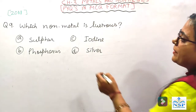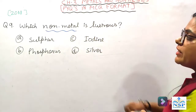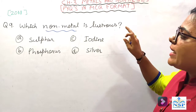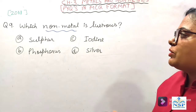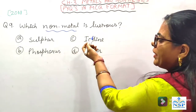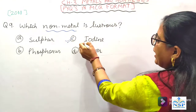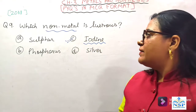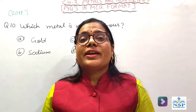Next question: which non-metal is lustrous? Generally non-metals में lustrous property नहीं होती — lustrous जो होता है वो metals में होता है। तो ये exception है। Options: Sulfur, Phosphorus, Iodine, Silver. Right answer is Iodine. Iodine एक ऐसा non-metal है जो shine देता है। इसके अलावा सभी non-metals non-lustrous होती हैं।